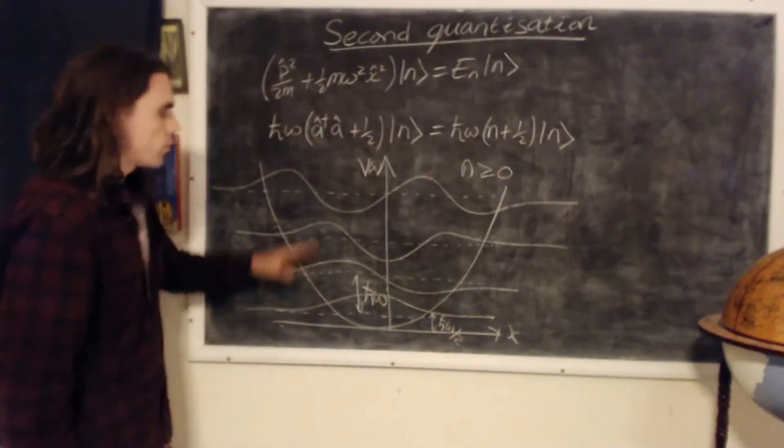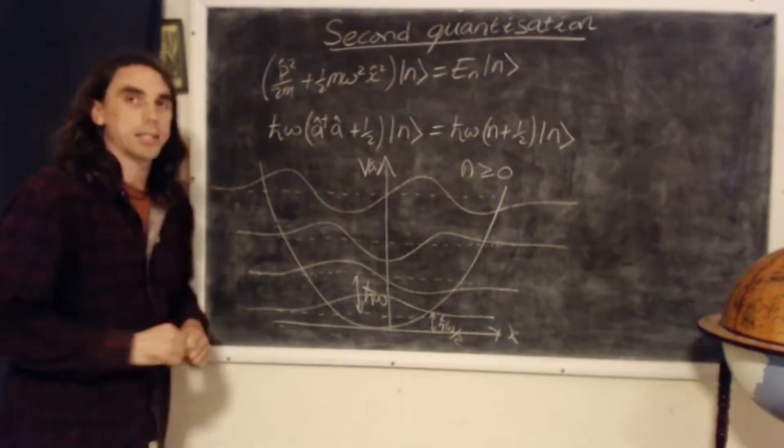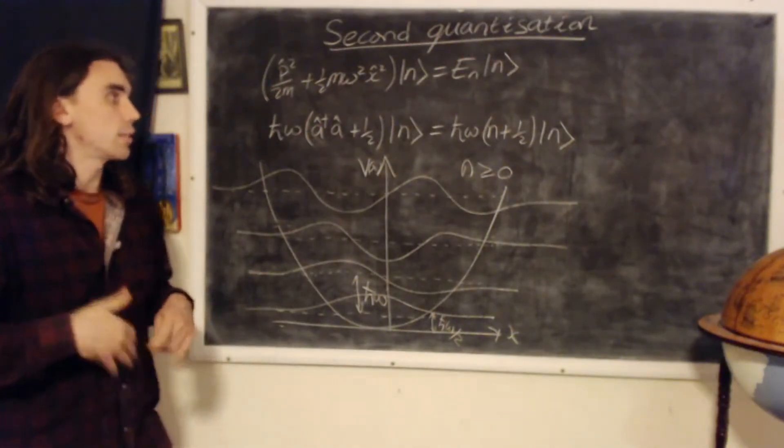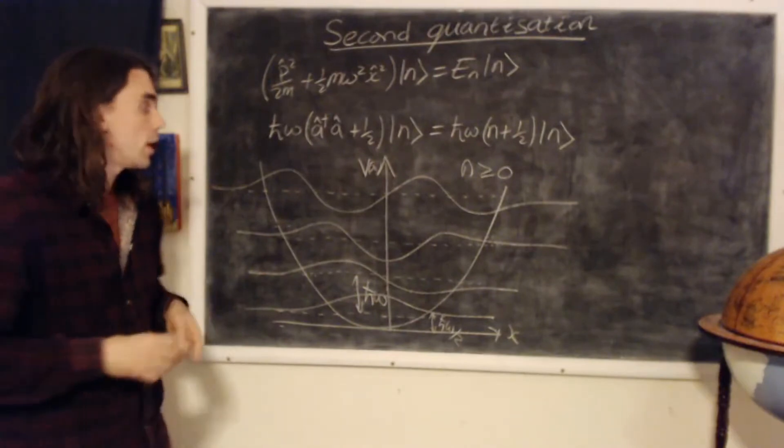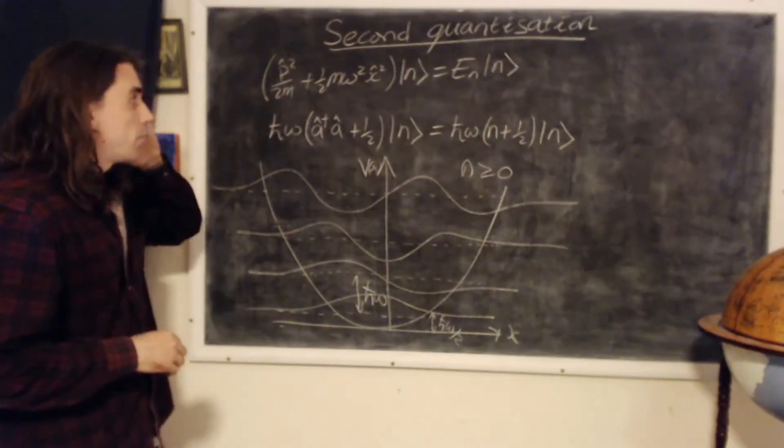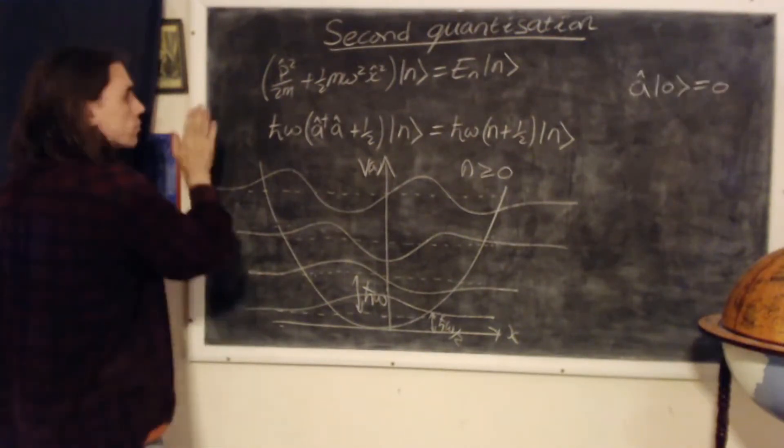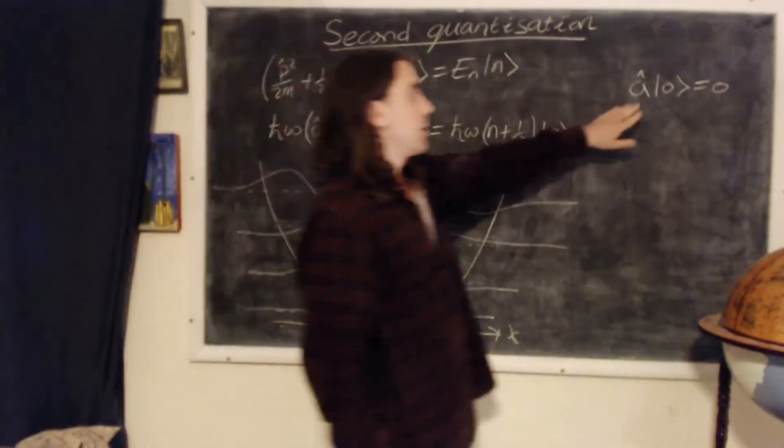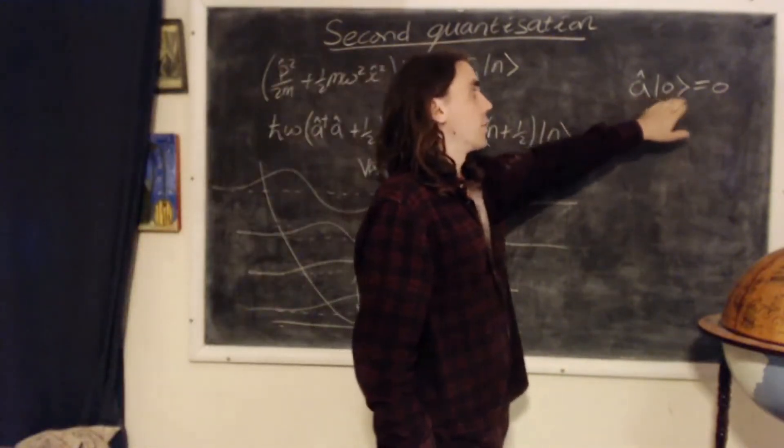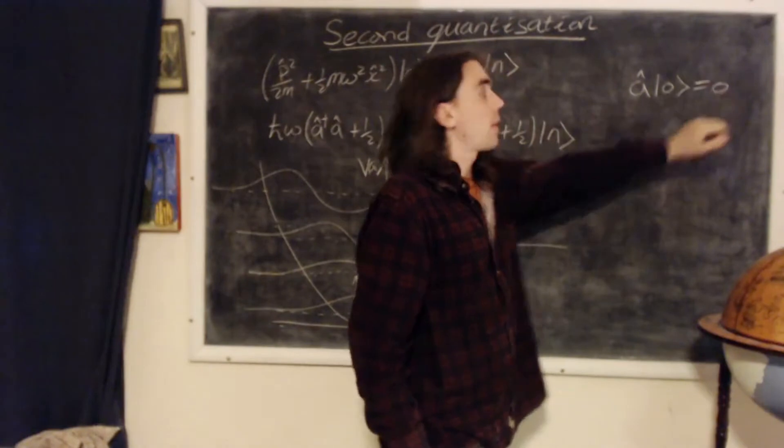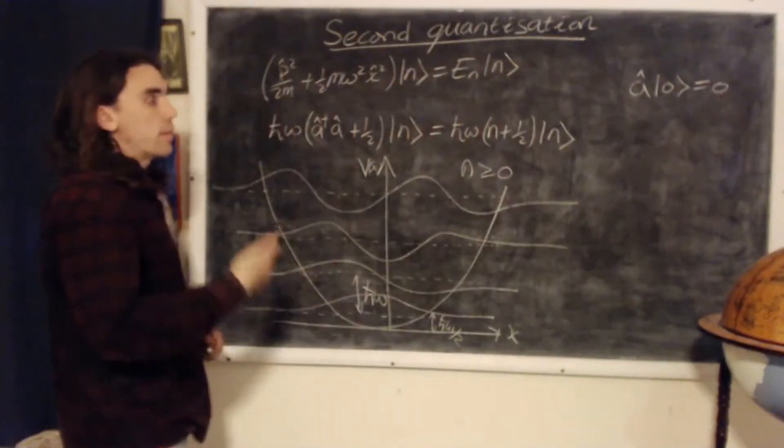And we can solve for the wave functions themselves by starting from the ground state, which we can deduce either using the Hermite polynomial method, or we can deduce it by using the definition of the ground state, which is that the lowering operator acting on the ground state gives a number zero. Using that method,